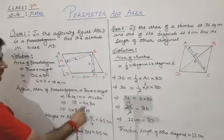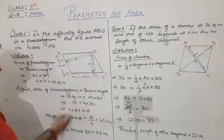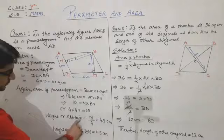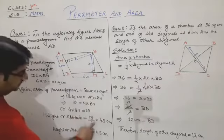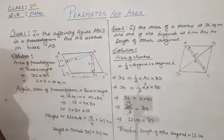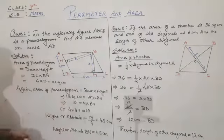So now 4 is multiplied by BN. This 4 will be transposed to this side, and 18 divided by 4, that is the altitude. The height or altitude BN is 18 divided by 4. By dividing we will get 4.5 centimeters, so the altitude BN is 4.5 centimeters.